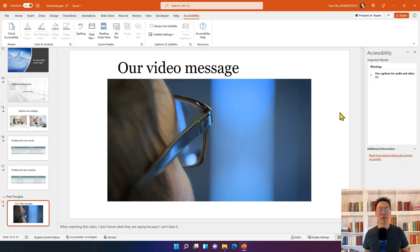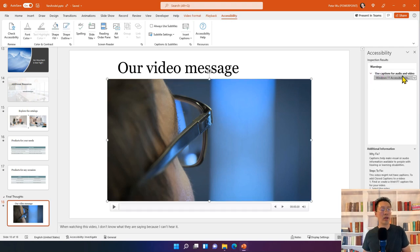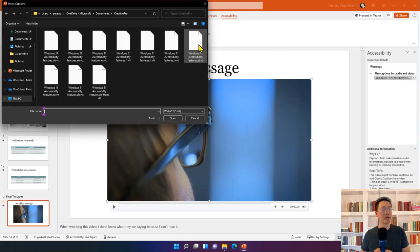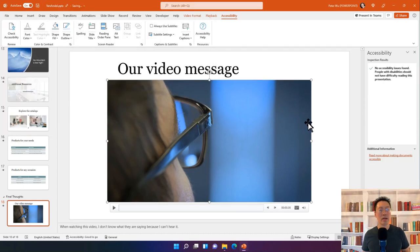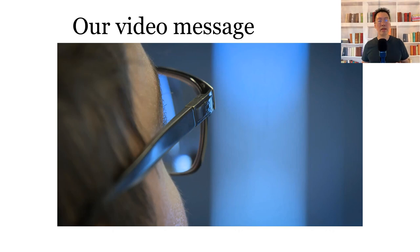PowerPoint for Windows supports out-of-band closed captions in WebVTT format. Select the video — Accessibility Checker will show a warning that captions are needed. Choose the Insert Caption command from Accessibility Checker or the Accessibility Ribbon, select the caption file, and insert it. That caption file is now associated with the video. Repeat for every caption track you want to add. When you play the video, a caption icon appears on the right side of the play bar — click it to choose which caption track to play.